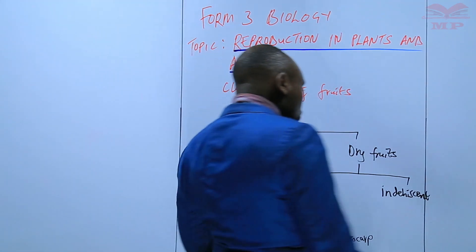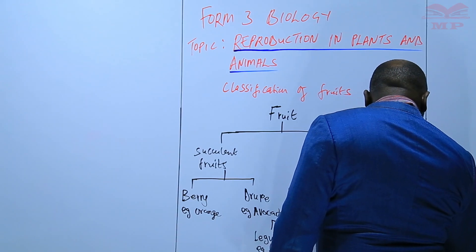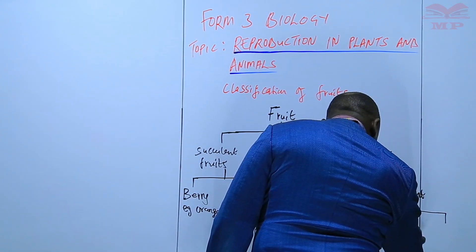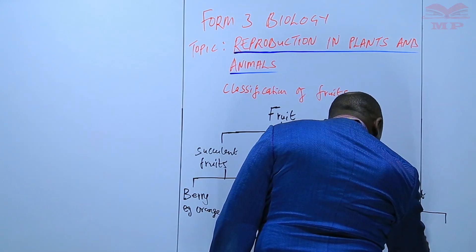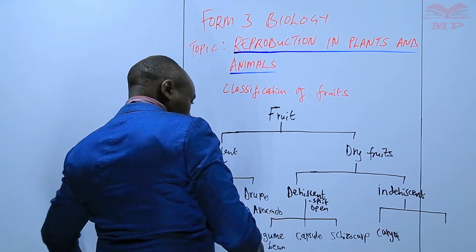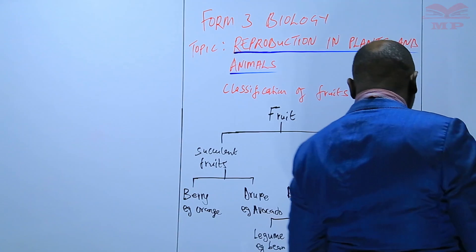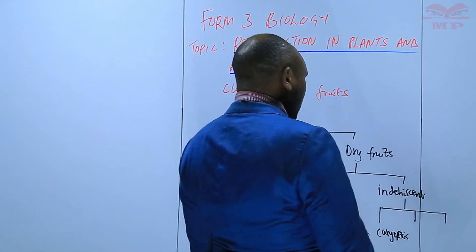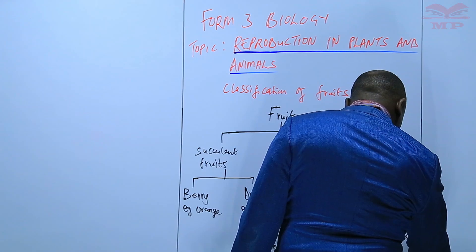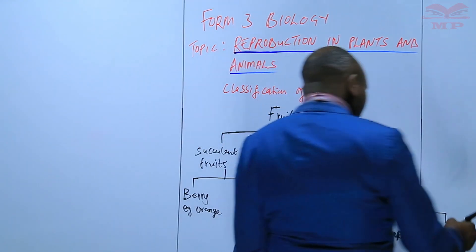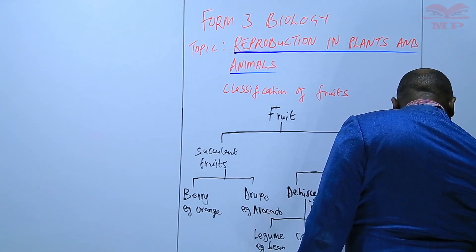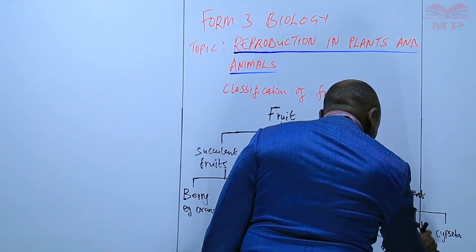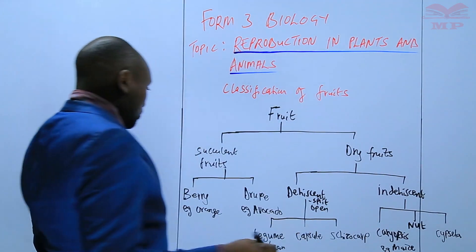Then we have the indehiscent ones — these ones do not split open. They are also categorized into three. We have what we call caryopsis, for example maize. Another example we have nuts. And then we have another one called a cypsela. So maize is a caryopsis. We will see the examples of the others as we continue.